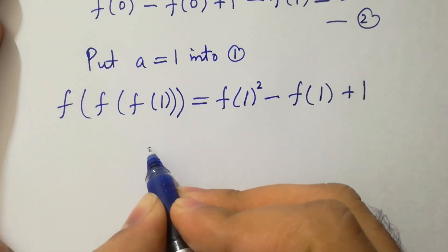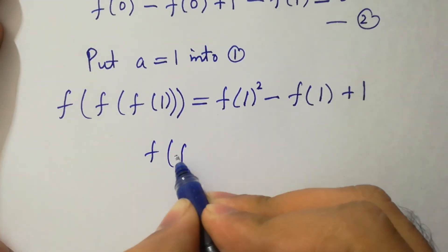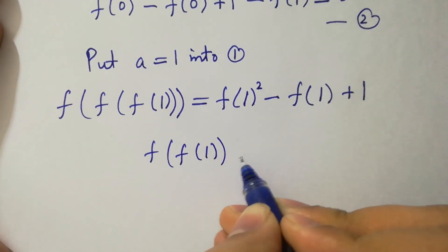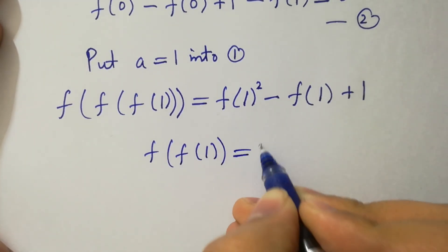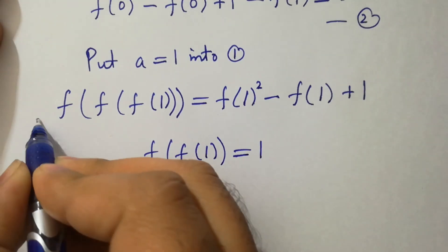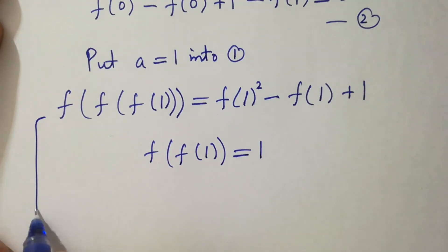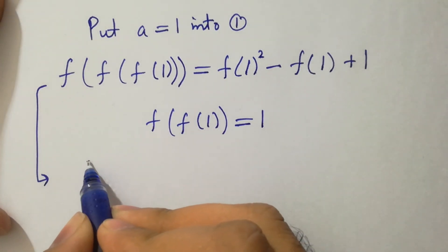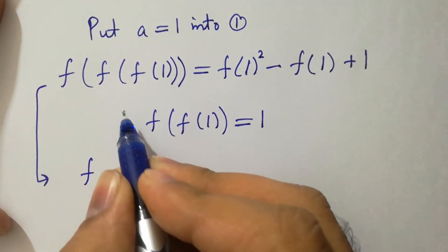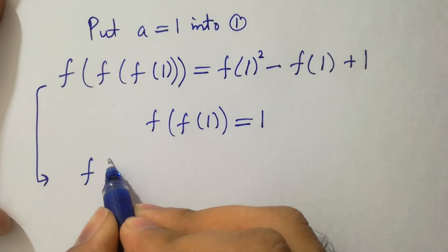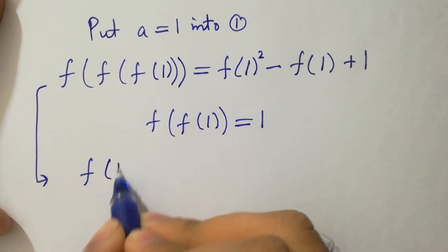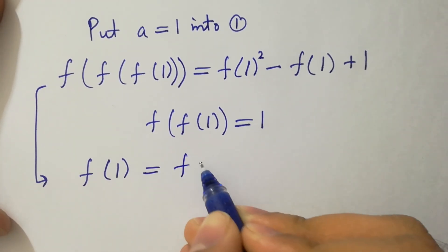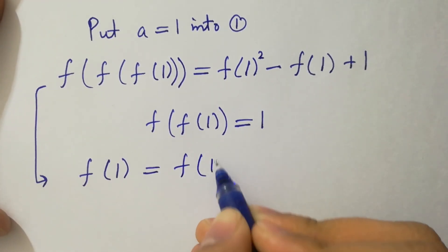Since f of f of f of 1 equals 1, then this becomes 1 equal to f of 1 squared.